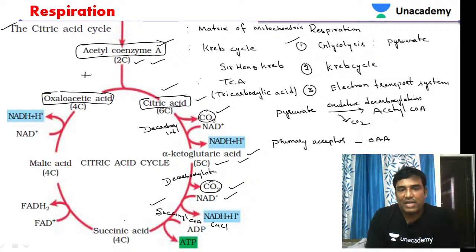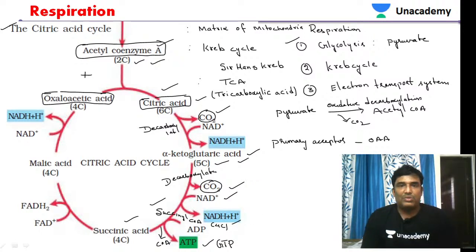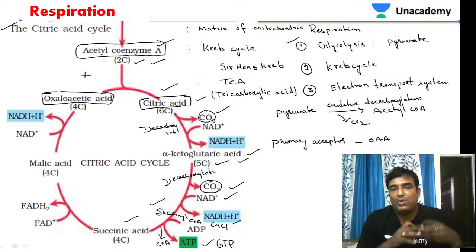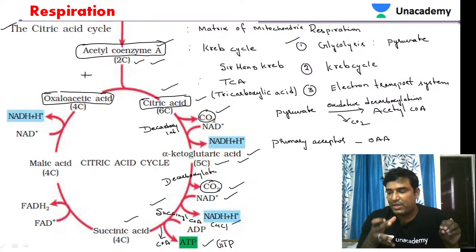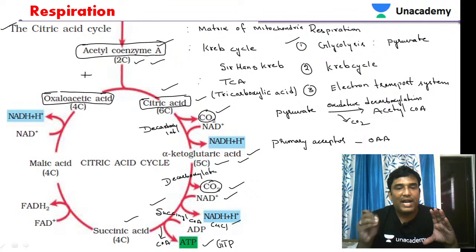Succinyl-CoA is converted into succinic acid, during which CoA is liberated. During liberation of CoA, energy is released and that energy is used to form ATP — in some books it is written as GTP. Our NCERT textbook, which is the basis for medical entrance examinations, shows it as ATP. So succinyl-CoA is converted into succinic acid, CoA separates, and the liberated energy helps form ATP.